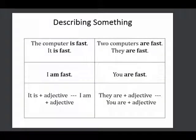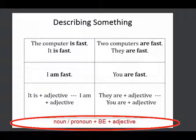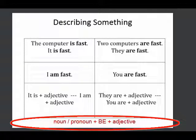So when we are describing something, we can use a noun and the be verb and an adjective. We can also use a pronoun, and the be verb, and an adjective.